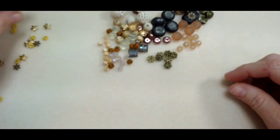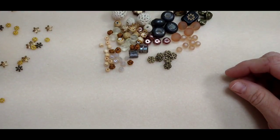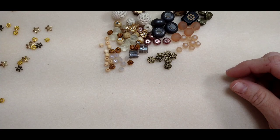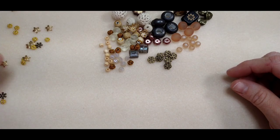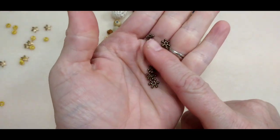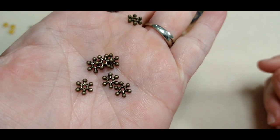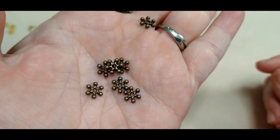Then we have these snowflake spacers in an antique bronze, and I love getting these in different colors. I always see them in silver, but it's really nice to get them in different colors. Little snowflake spacers.